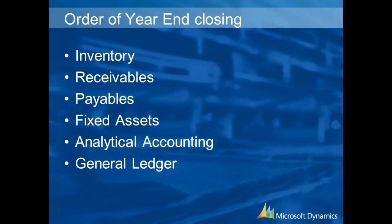The suggested order for closing year-end is: inventory, then receivables, then payables, fixed assets, analytical accounting, and then general ledger. Payables has an impact on inventory, and payables also has an impact on fixed assets. Receivables goes through the general ledger, so there's a good reason why you want to close in that order. That's the order we're going to be talking about today.